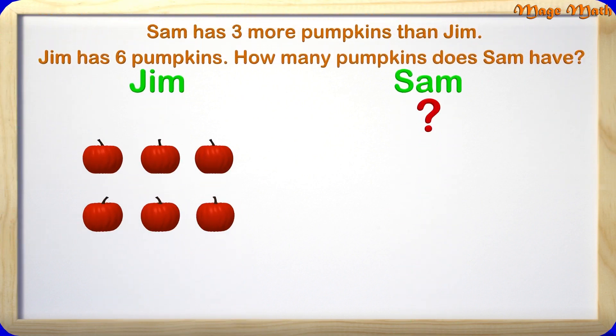Here is another problem. Sam has 3 more pumpkins than Jim. Jim has 6 pumpkins. How many pumpkins does Sam have? We know Jim has 6 pumpkins as you see here, but we don't know how many pumpkins Sam has. The question says Sam has 3 more, so we are going to add 3 more pumpkins.